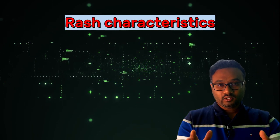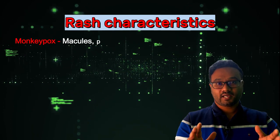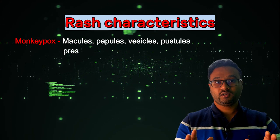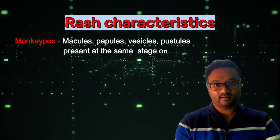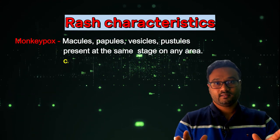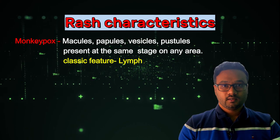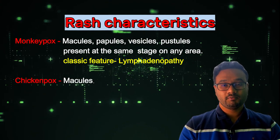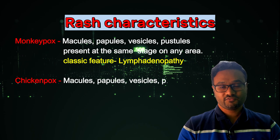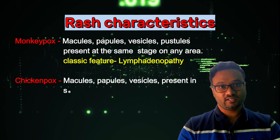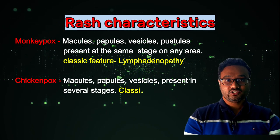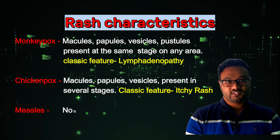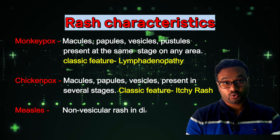In monkeypox, rashes — macules, papules, vesicles, and pustules — appear at the same stage on any area, and the classic feature is lymphadenopathy. In chickenpox, macules, papules, and pustules are present in several stages, and the classic feature is an itchy rash. In measles, the rash is non-vesicular across different stages, and the classic feature is Koplik's spots that appear in the mouth.